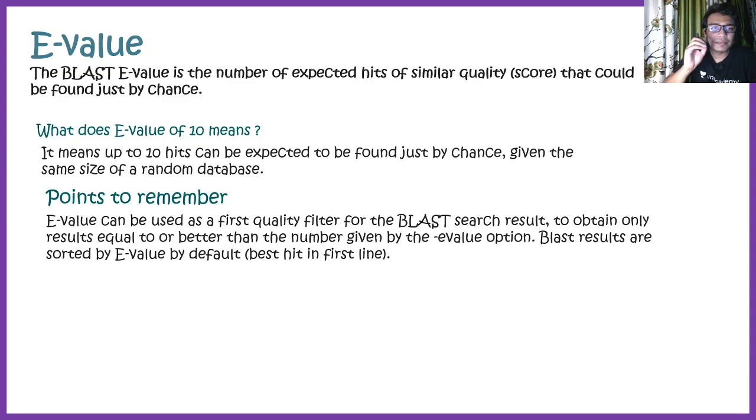These things can be obtained from BLAST. Now let us try to understand what is E value. Simply, E value is a number that tells you about expected hits of similar quality that could be found just by chance. That means, let's say we have an E value of 10, it means up to 10 hits can be expected to be found by chance.